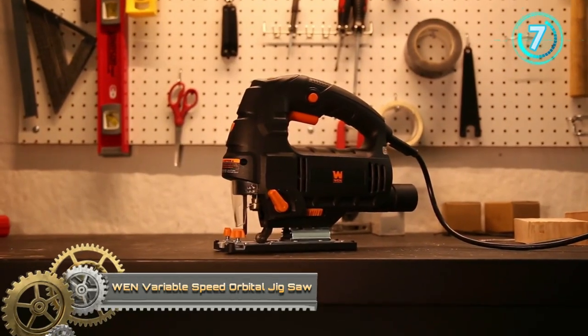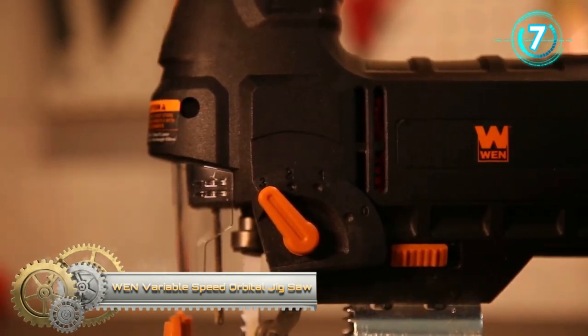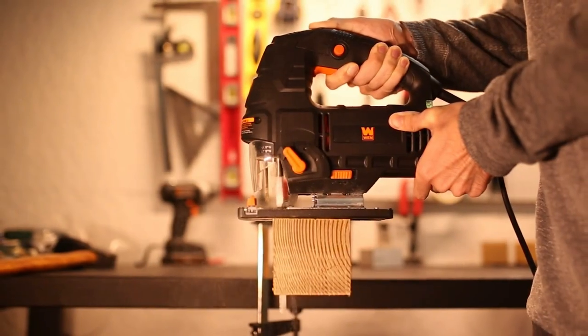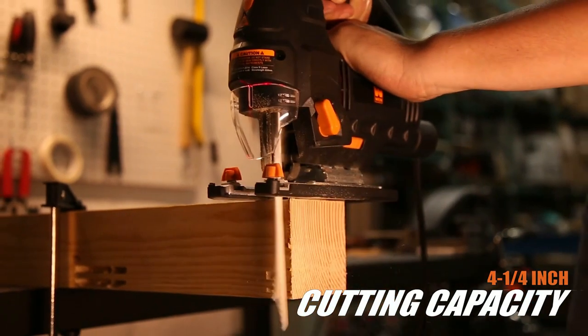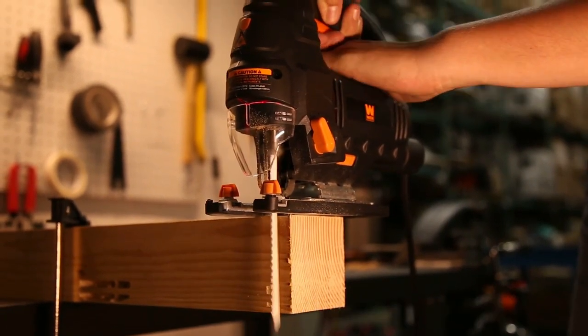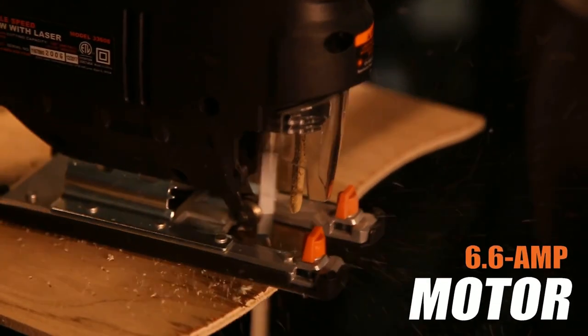The WEN 6.6 Amp Variable Speed Orbital Jigsaw glides through wood, metal, plastic and more, making any pattern or contour easy to achieve. The variable speed dial adjusts the stroke of the T-Shank blade anywhere from 0 to 3,300 strokes per minute.